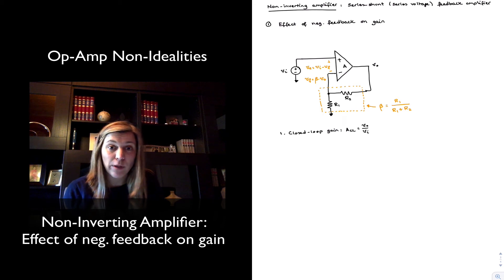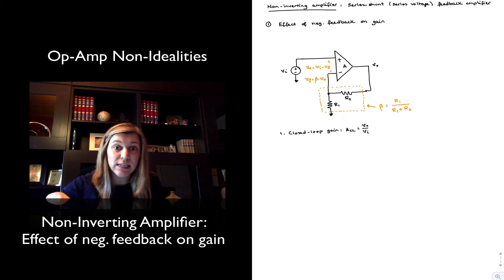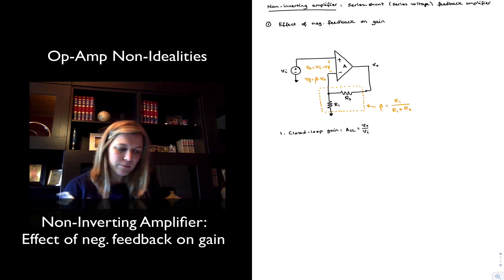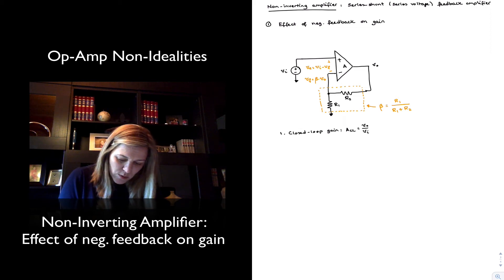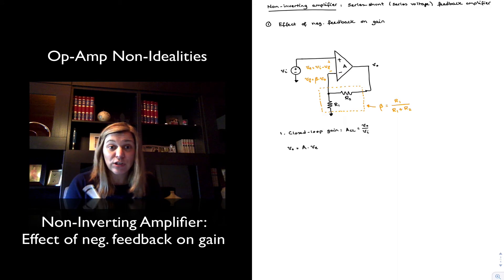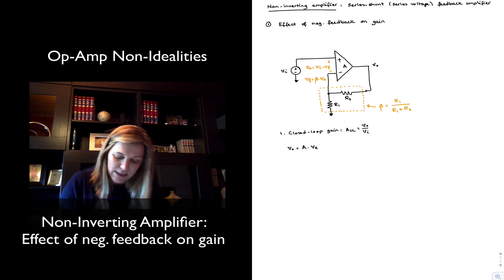But once I connect this negative feedback network to it, now I have a new amplifier, which is comprised not just of the op-amp, but op-amp A and resistors R1 and R2. So what is the gain of the overall system, of the closed-loop system? As we previously saw, I can express Vout as the gain times the input signal, the differential input signal in the case of the op-amp, which is the error signal in this case.